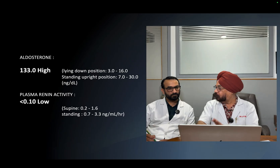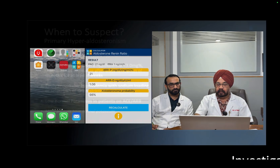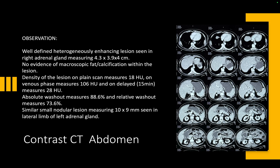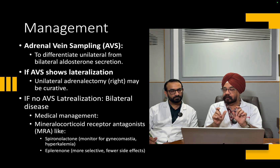There are now apps available to calculate ARR and estimate the probability of hyperaldosteronism. The next step was CT scan to look for an adrenal adenoma or bilateral adrenal hyperplasia. In our patient, CT scan showed a reasonably sized adenoma on the right side and a smaller one on the left — a circumscribed lesion visible adjacent to the kidney.